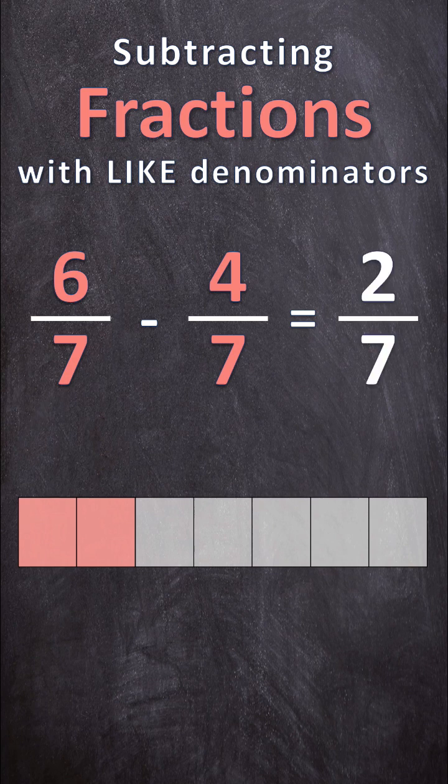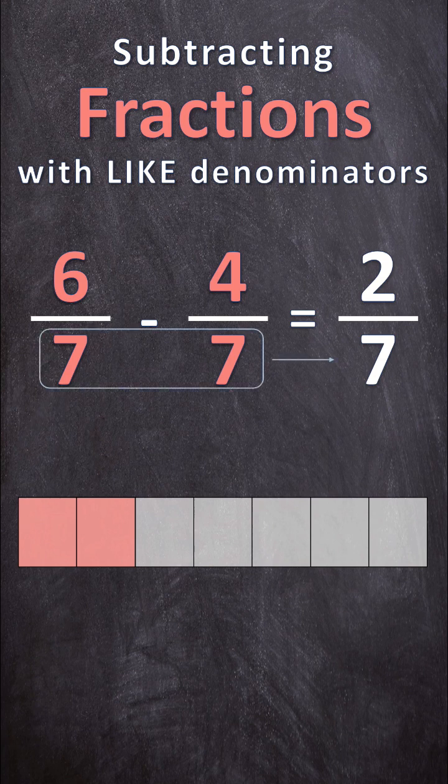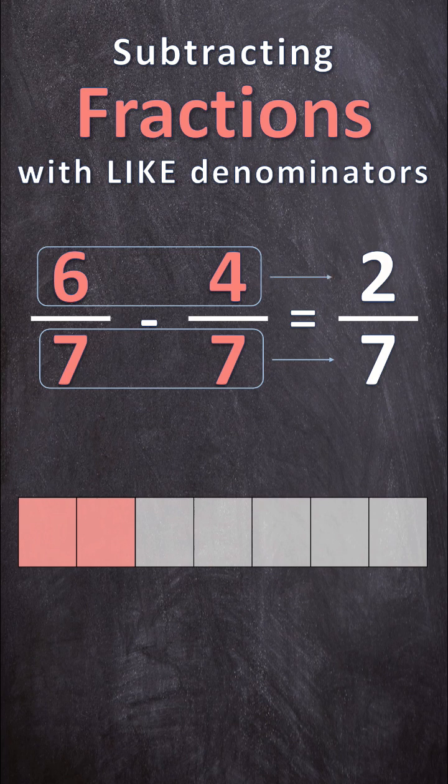So can you see that our denominator in our answer stays the same as our denominators in our question? And for the numerator, we are going to subtract the 4 from the 6 to get the 2.